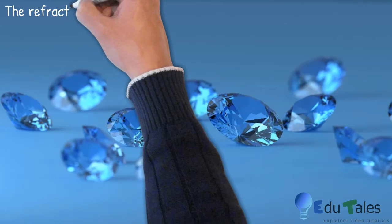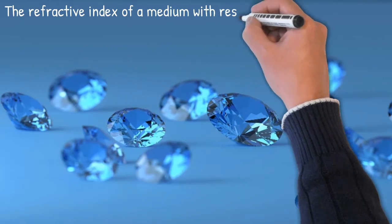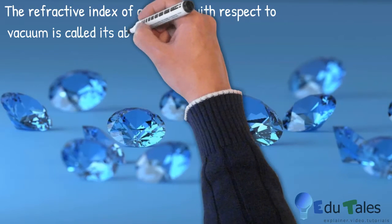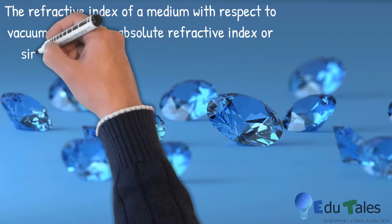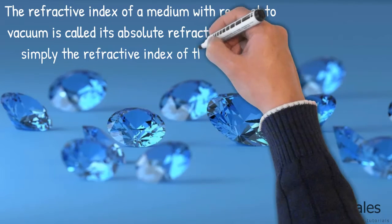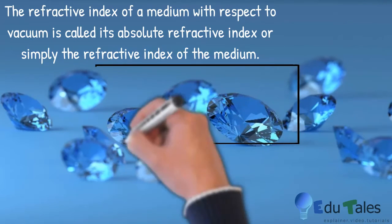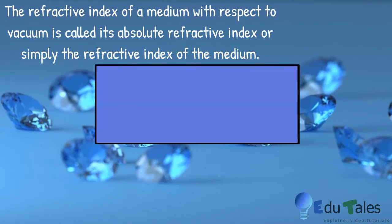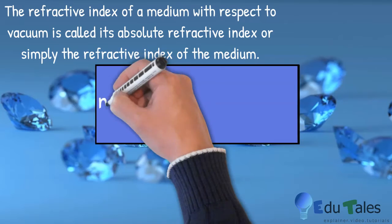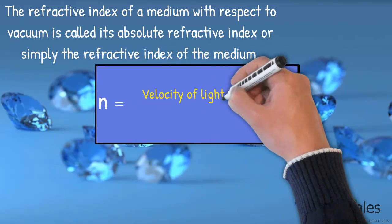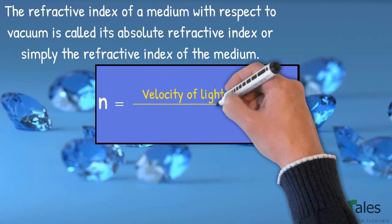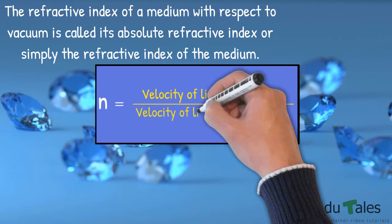The refractive index of a medium with respect to vacuum is called its absolute refractive index or simply the refractive index of a medium. An absolute refractive index of any medium is given by n = velocity of light in vacuum divided by velocity of light in the medium.